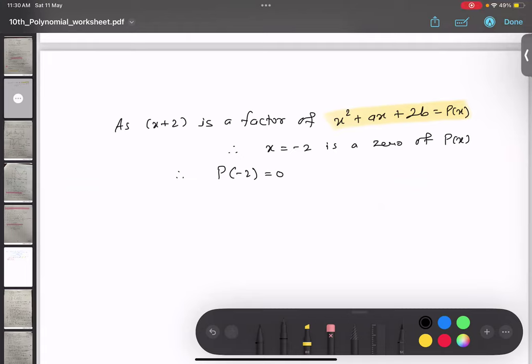So I will substitute this value in this polynomial: minus 2 squared plus a bracket minus 2 plus 2b equals zero. So now is this thing clear?